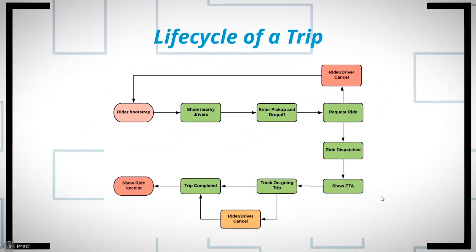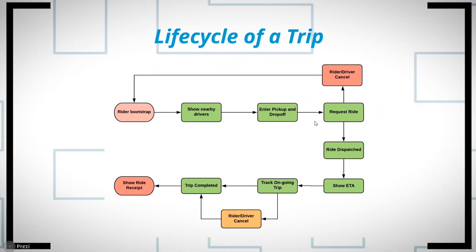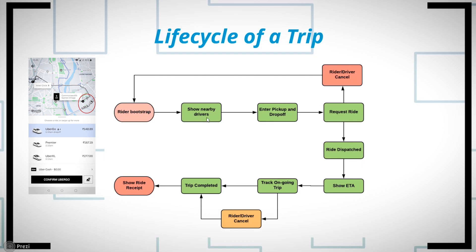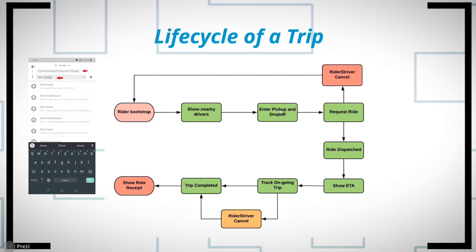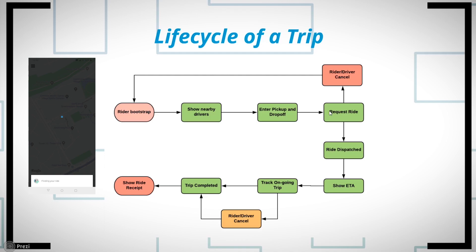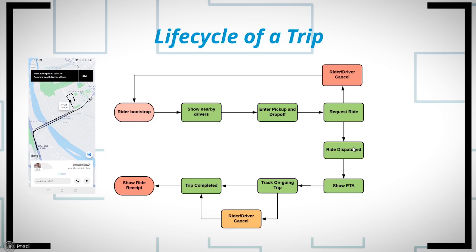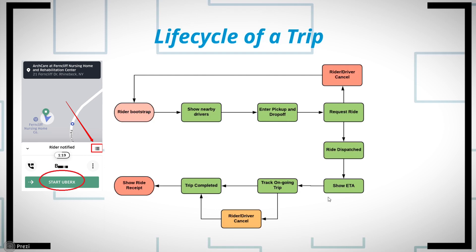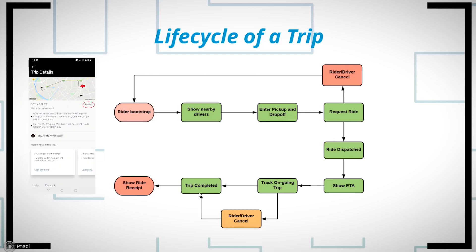Let's start by looking at the lifecycle of a trip. Say we have Bob as our user requesting an Uber ride. As soon as he opens the app, his phone shows nearby drivers. He enters his pickup and drop-off location and presses 'Request Ride.' Uber sends the request to all nearby available drivers and waits for a driver to accept, at which point a ride gets dispatched and the driver's ETA is shown on Bob's app.